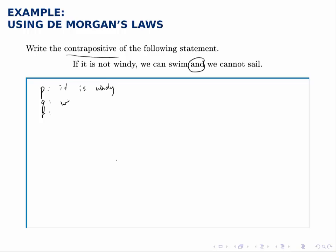q will be we can swim and r will be we can sail. Again making our original statements positive ones.